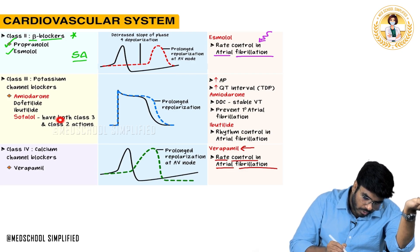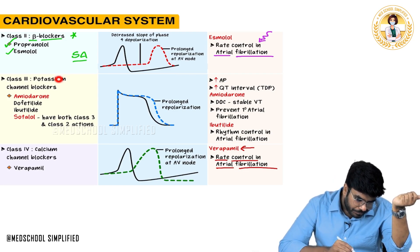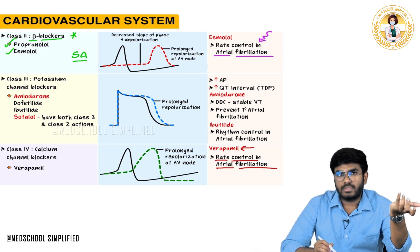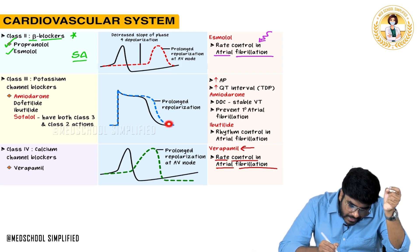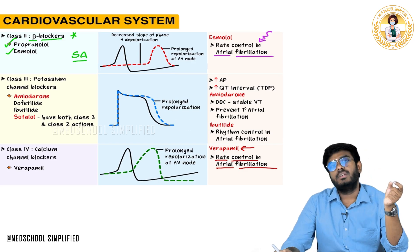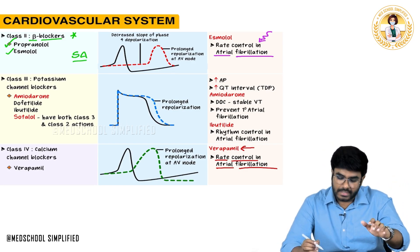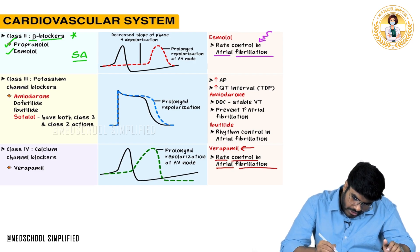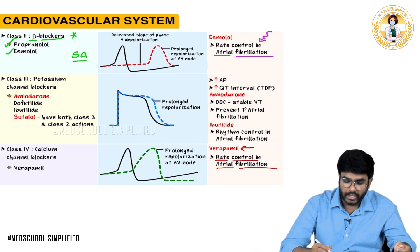Sotalol has both class 3 and class 2 actions — it's a beta blocker as well as a potassium channel blocker. As potassium channel blockers, these drugs affect phase 3 repolarization in ventricular myocardium. Repolarization takes a lot more time, so action potential duration increases and heart rate decreases. These drugs increase the QT interval and can cause torsades de pointes.